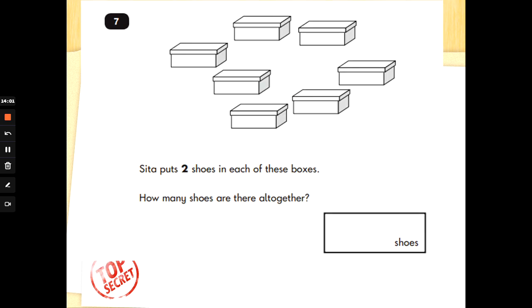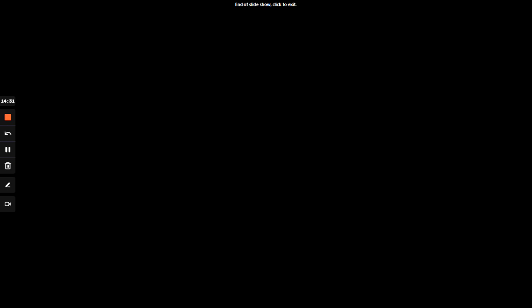Number 7. Sita puts two shoes in each of these boxes. How many shoes are there altogether? You've got to imagine the number 2 on all of these boxes. We are counting in twos. Let's count in twos and cross out each box so we remember we've used them. 2, 4, 6, 8, 10, 12, 14. 14 shoes. Well done. Fantastic work, special agents. Excellent. Leave me a like if you'll be tuning in next time. Don't share these tips with anyone else. Bye for now.